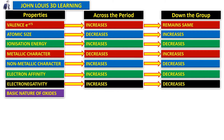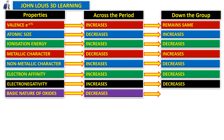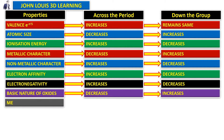Next is the basic nature of oxides. Almost all elements form oxides. Across the period, the basic nature of oxides decreases, therefore down the group it increases.